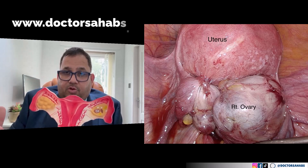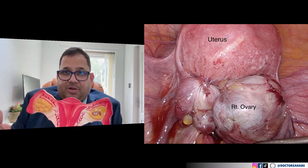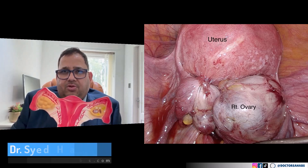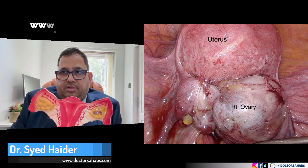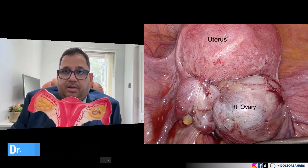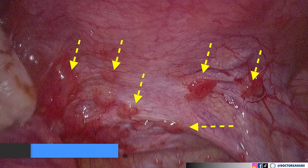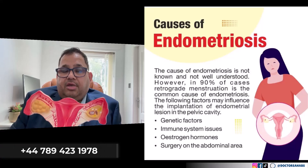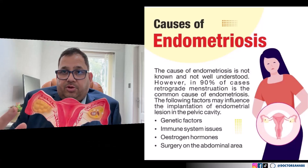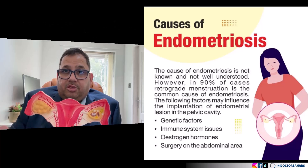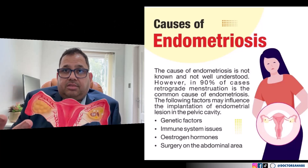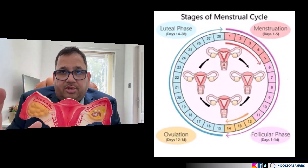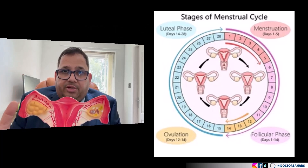We don't know the exact cause of endometriosis, but retrograde menstruation is one of the most common theories. There is also a familial link — endometriosis can run in families. These are the leading theories for what might cause endometriosis, and endometriosis is also linked with the menstrual cycle.